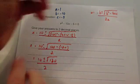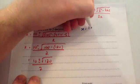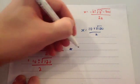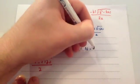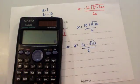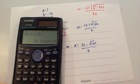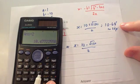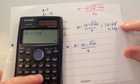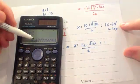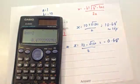At this point, separate it into two possible solutions: x equals 10 plus root 120 divided by 2, or x equals 10 minus root 120 divided by 2. Working these out on the calculator: 10 plus the square root of 120, then divide by 2, gives 10.48 to two decimal places. And 10 subtract the square root of 120, then divide by 2, gives minus 0.48 to two decimal places. So we've got our two solutions to two decimal places.